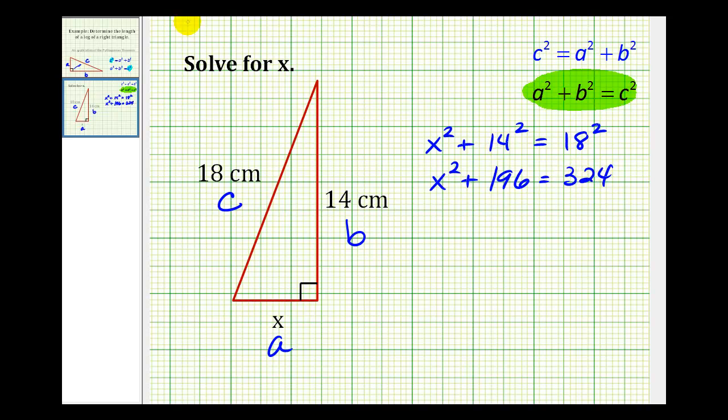Now we'll subtract 196 on both sides of the equation. This would be zero, so we have x² = 324 - 196, which equals 128.